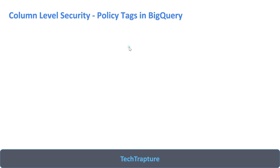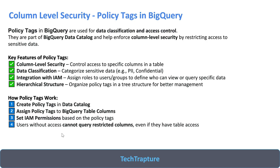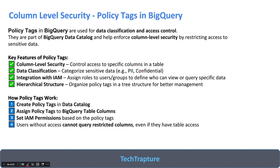Policy tags in BigQuery are used for data classification and access control. For example, in an employee table with multiple columns like employee ID, employee name, salary, and country, we may want to restrict the salary column so it is not visible to everyone. We can use policy tags so that the salary column can be hidden or masked from specific users, while providing access only to authorized users.